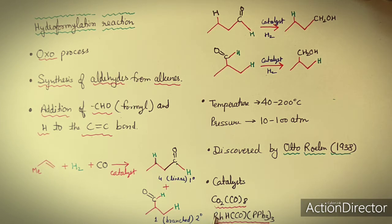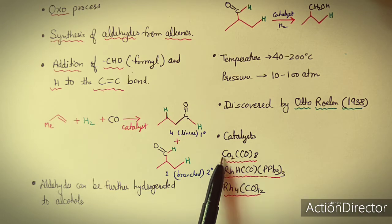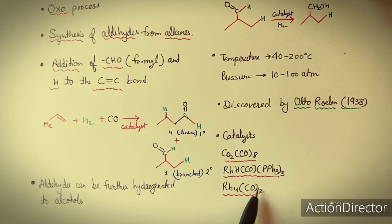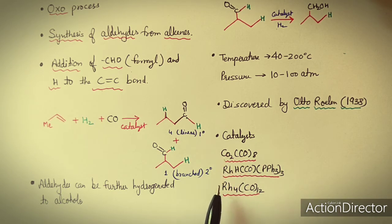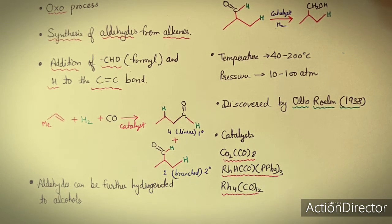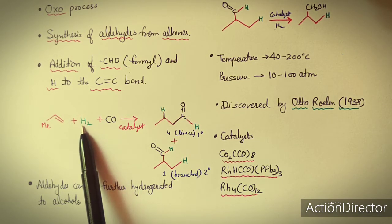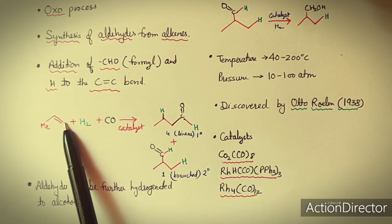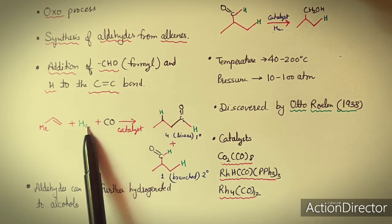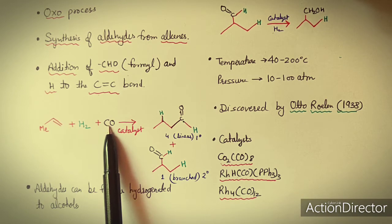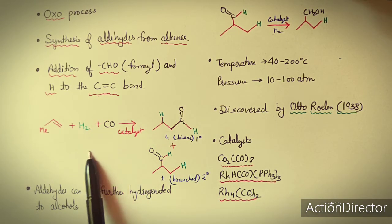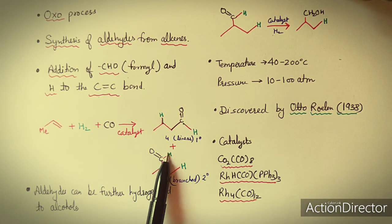The catalysts used for hydroformylation are cobalt-based and rhodium-based catalysts, such as Co₂(CO)₈, Co₄(CO)₈, RhCO(PPh₃)₃, and Rh₄(CO)₁₂. In the oxo process, one hydrogen from H₂ adds to the double bond portion, and the other hydrogen bonds to the carbon of the carbonyl group to form the CHO group.